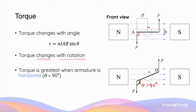It's important to understand that when the armature is horizontal — when theta is 90 degrees — this is when sin theta gives you the maximum value. As a result, this is also when the torque acting on the armature is at its greatest.